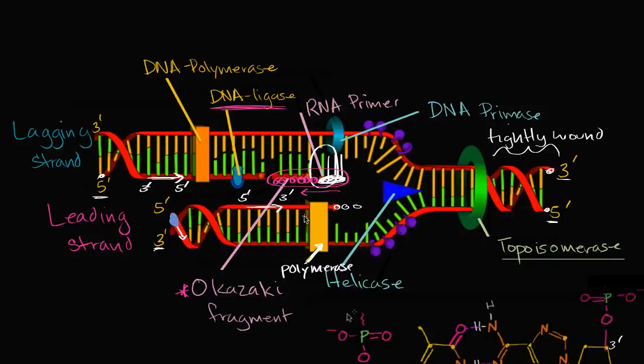In the earlier video on DNA replication, we go into some detail about leading strands and lagging strands and all of the different actors, all of these different enzymatic actors. But I left out what is probably the most mind-boggling aspect of all of this, and that's the speed and the precision with which this is actually happening.